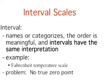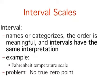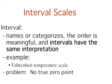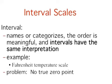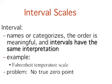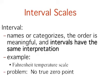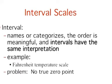For example, there is no sense in which the ratio of 40 to 20 degrees Fahrenheit is the same as the ratio of 100 to 50 degrees. No interesting physical property is preserved across the two ratios. After all, if the zero label were applied at the temperature that Fahrenheit happens to label as 10 degrees, the two ratios would instead be 30 to 10 and 90 to 40, no longer the same. For this reason, it does not make sense to say that 80 degrees is twice as hot as 40 degrees. Such a claim would depend on an arbitrary decision about where to start the temperature scale, namely, what temperature to call zero, whereas the claim is intended to make a more fundamental assertion about the underlying physical reality.